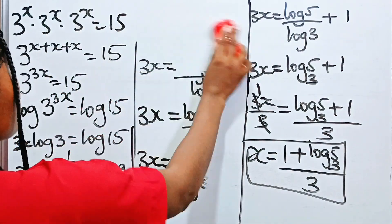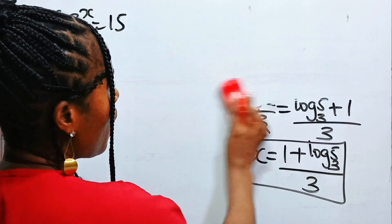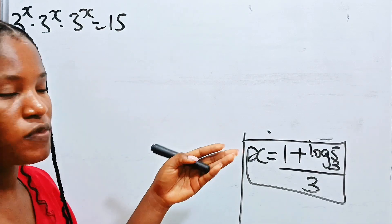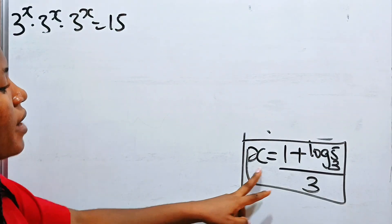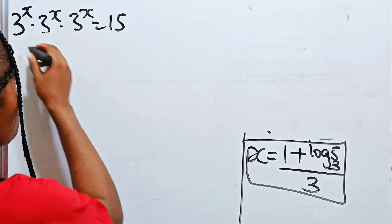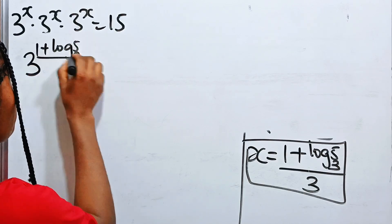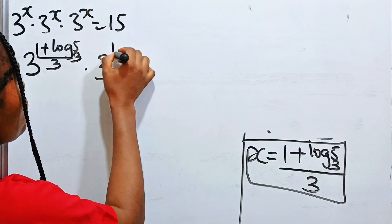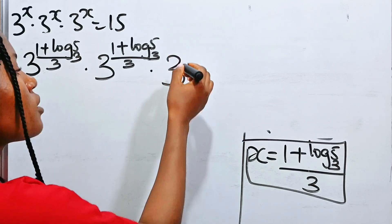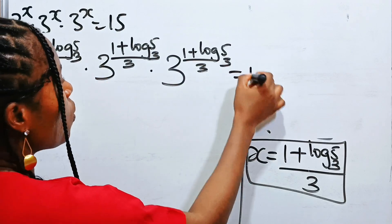Let's prove that the answer we got is right. According to the question, 3 to the power of x multiplied by 3 to the power of x multiplied by 3 to the power of x is equal to 15. Now let's see if that is true, where x is (1 + log 5 base 3) divided by 3. It's going to be 3 to the power of (1 + log 5 base 3)/3, multiplied three times, equals 15.